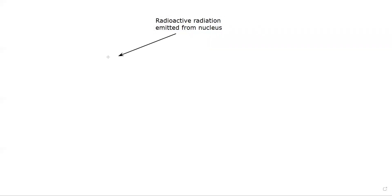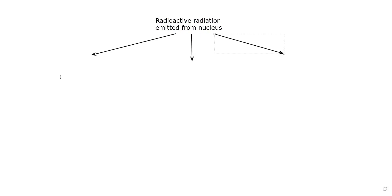Radioactive radiations are emitted from the nucleus, and the three types of radioactive radiations emitted from the nucleus are known as alpha, beta, and gamma.